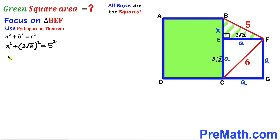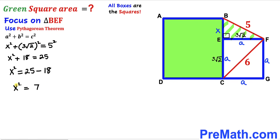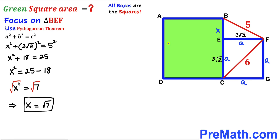Filling in: X² + (3√2)² = 5², which gives X² + 18 = 25. Moving 18 to the other side: X² = 7. Taking the square root on both sides, X = √7. So segment BE turns out to be √7.